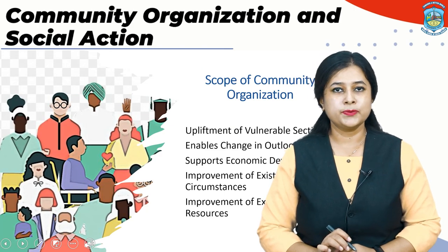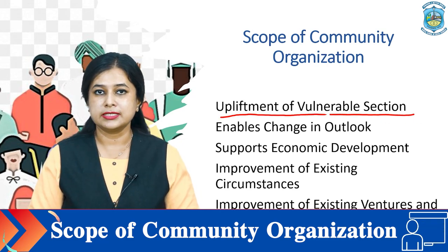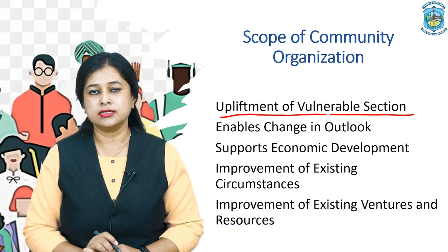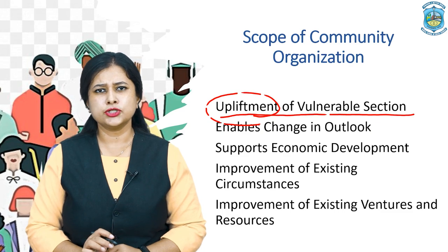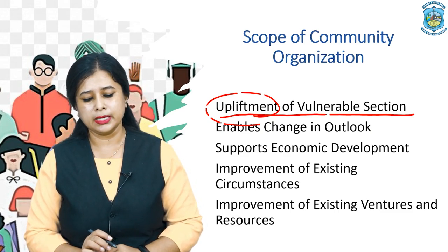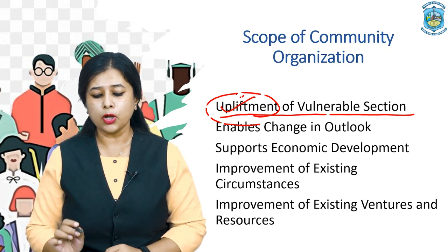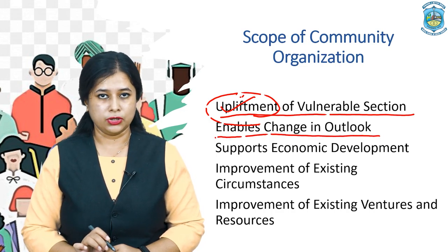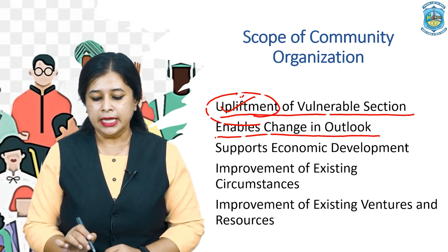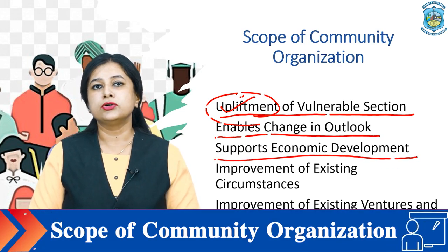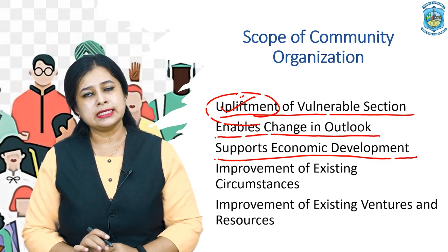We will now move to the scopes of community organization. The first scope refers to the upliftment of vulnerable sections. We look into the community on the basis of needs and development objectives, and whoever requires upliftment or is not getting the resources they are supposed to get, we look into interventions for their upliftment. We also look into enabling change and outlook, wherein people will have acceptance and empathy and include everyone in resources. It also supports economic development of the community, looking forward to opportunities in economic development, whether it is starting a new venture or connecting people with available resources.